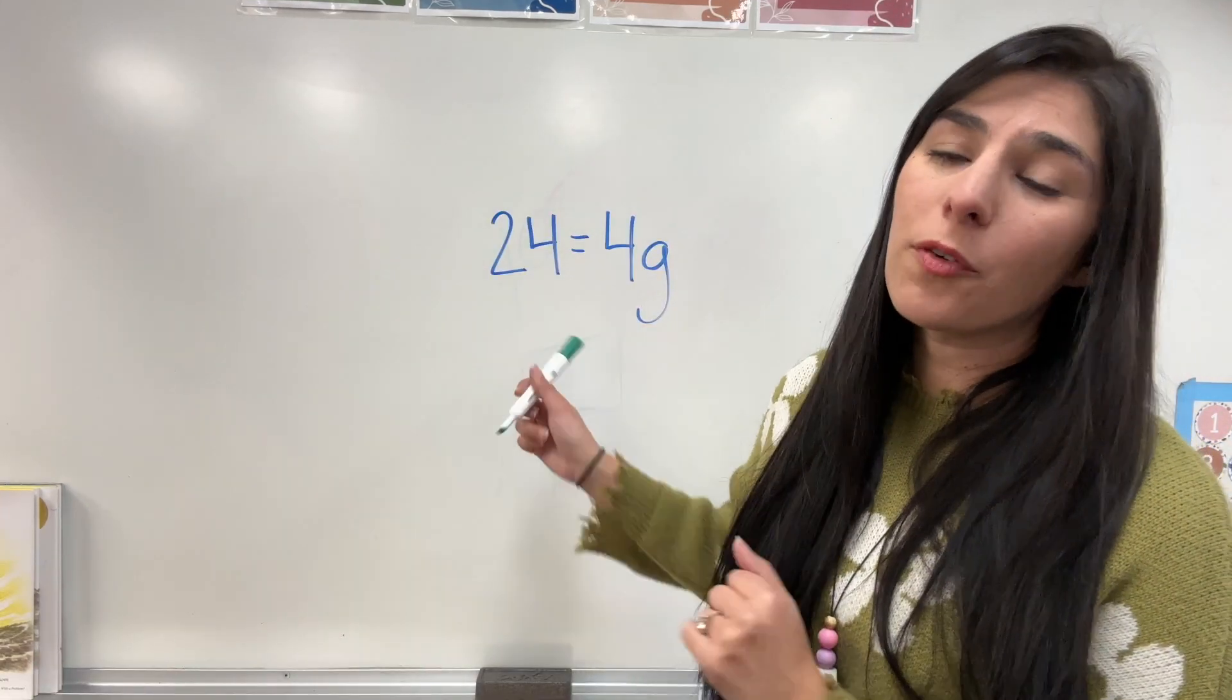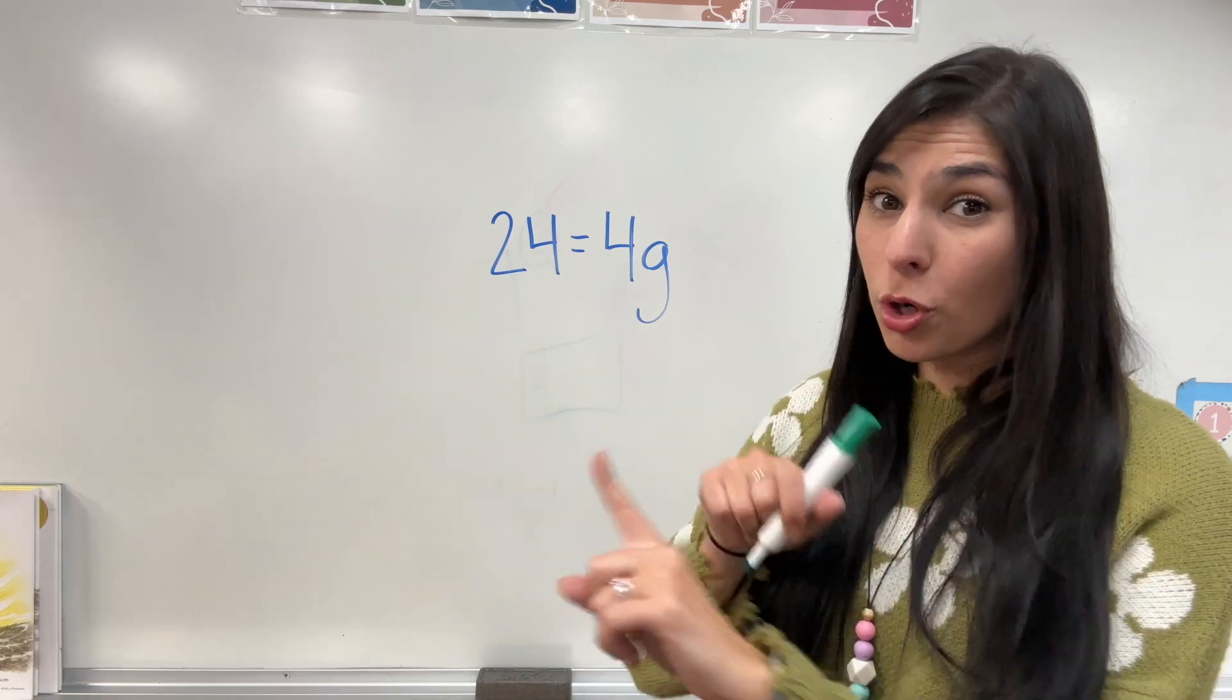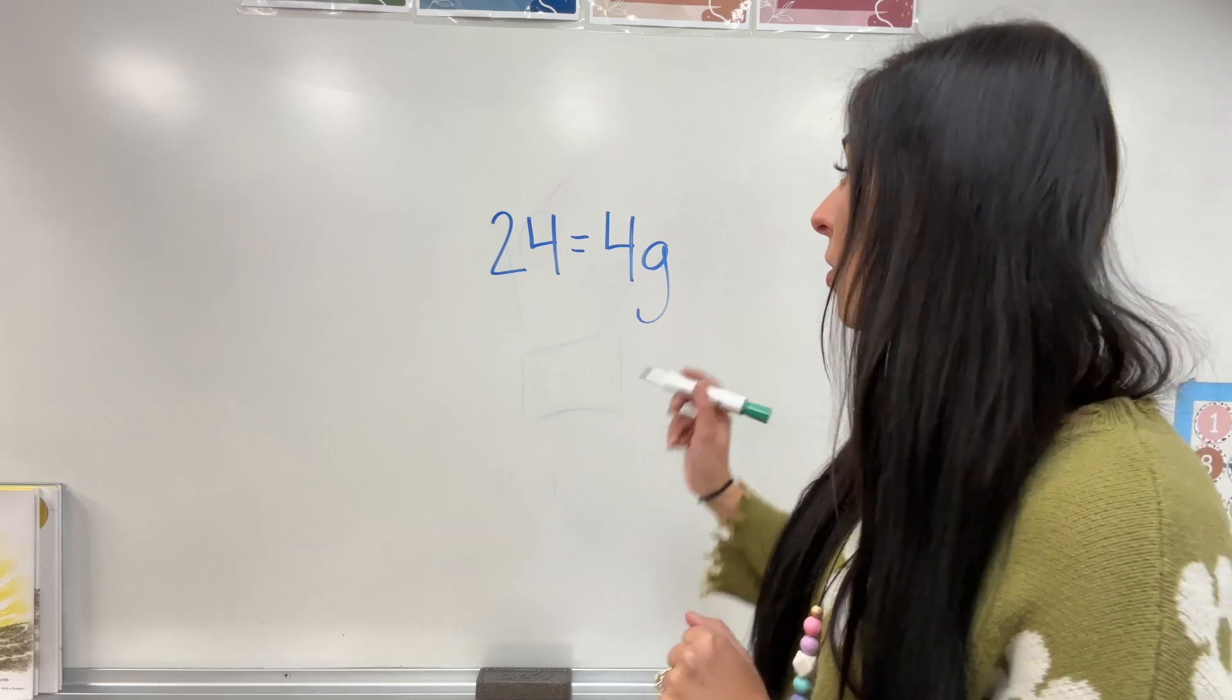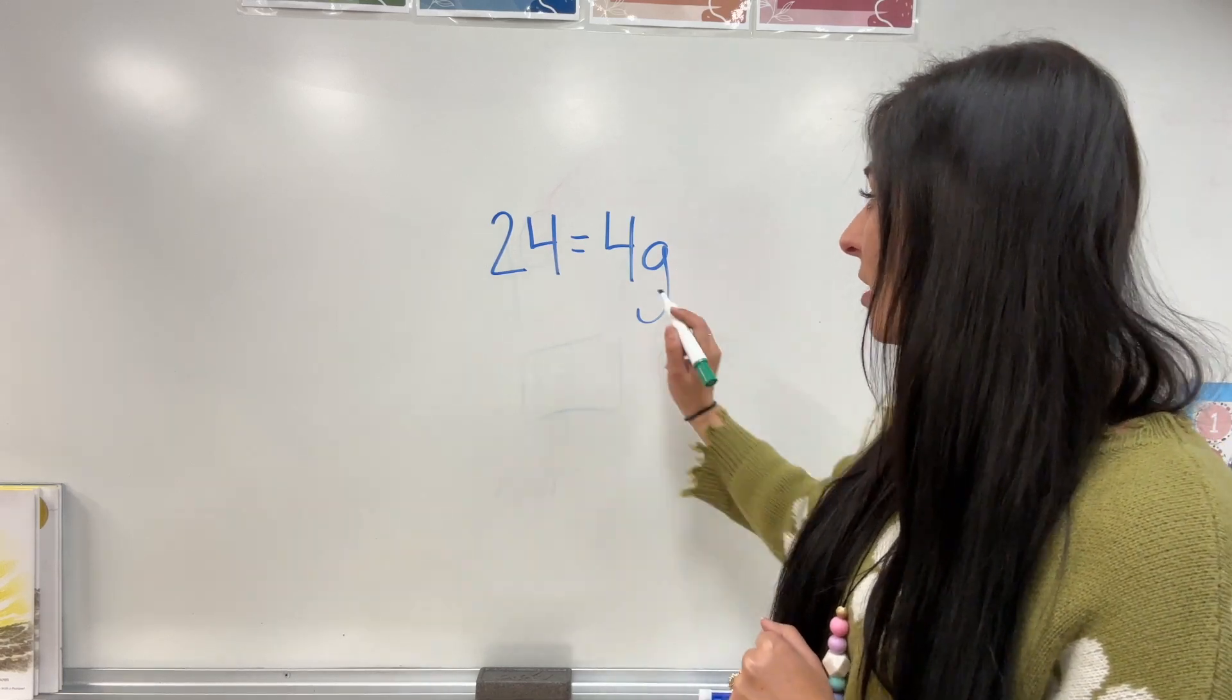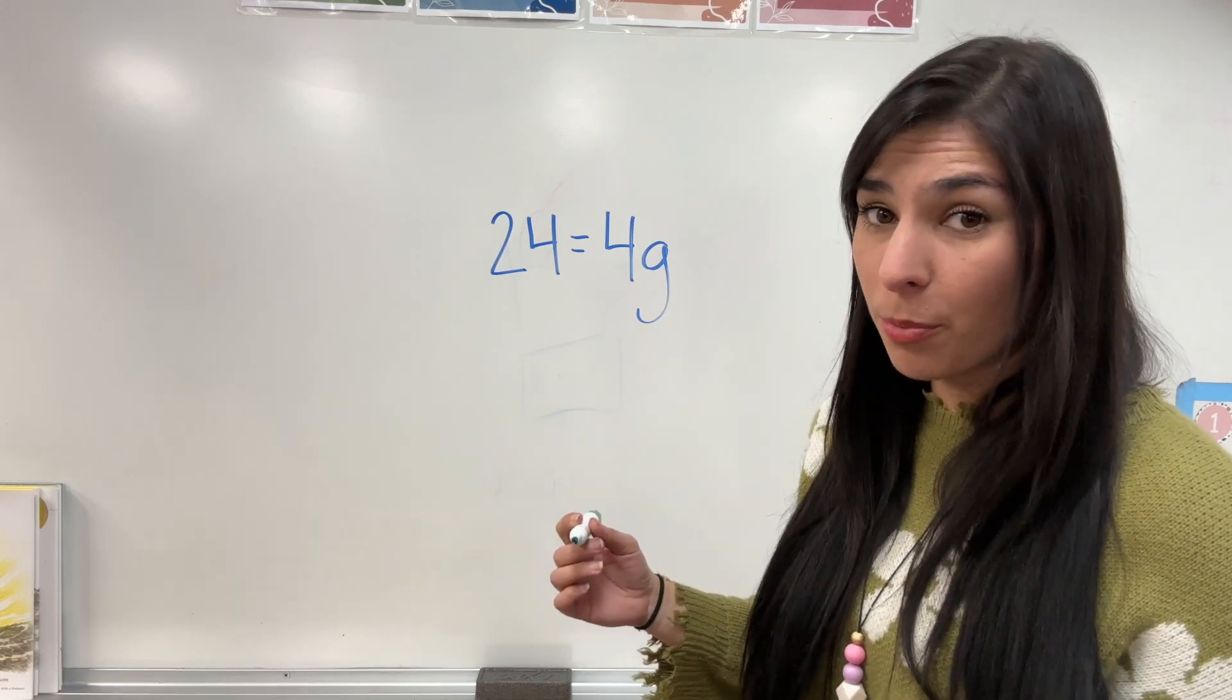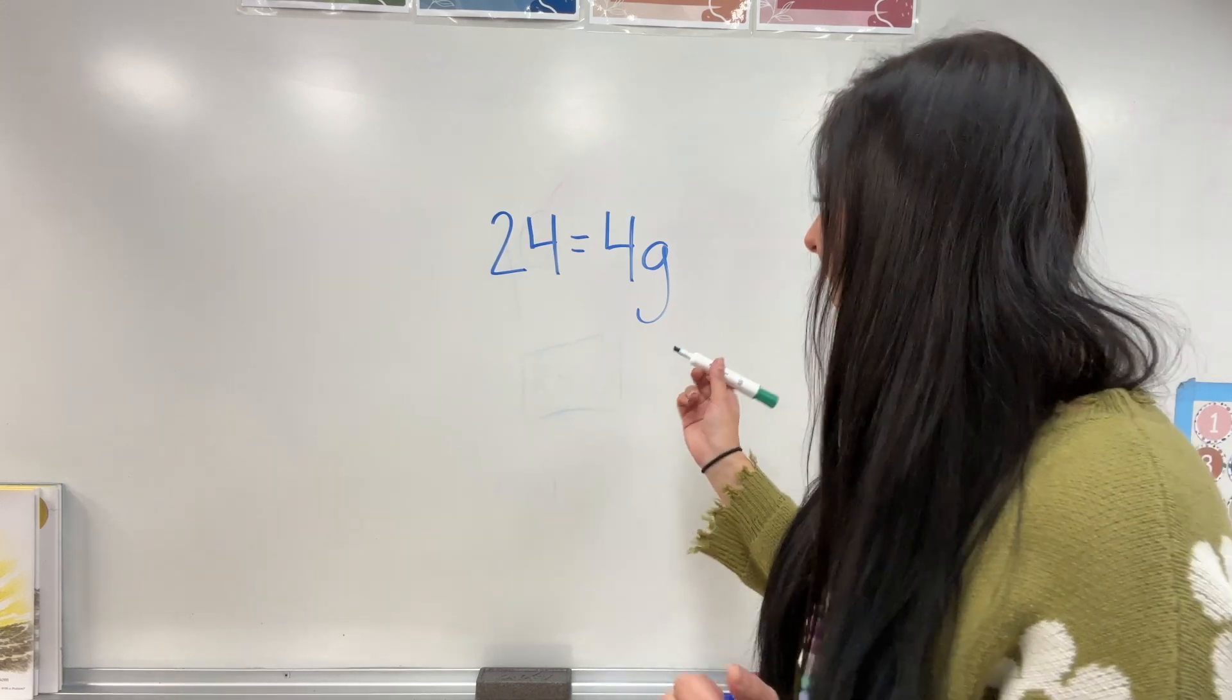Let's do another one. This equation, we have 24 equals 4g. The order of it doesn't matter, but I do have to get the variable by itself. So, if I need to get g by itself, that means it needs to do the opposite. 4 and g, they're right next to each other, which means multiplication. The inverse operation of multiplication, the opposite, is division.